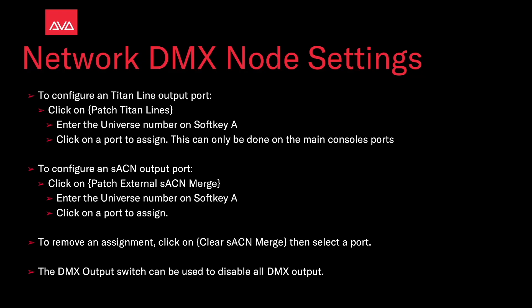To configure a Titan line output port, click on Patch Titan Lines, enter the universe number on soft key A, then click a port to assign — this can only be done on the main console's ports. To configure a streaming ACN output port, click on Patch External Streaming ACN Merge, enter the universe number on soft key A, and then click on the port you wish to assign.